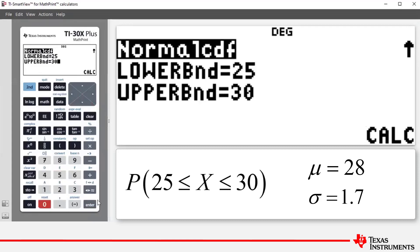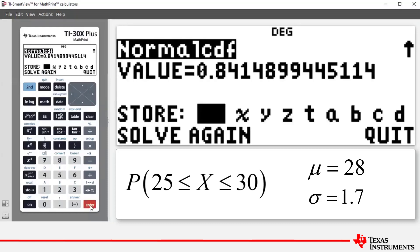We can now press enter to highlight calc, which is short for calculate. Press enter, and so our probability correct to four decimal places is equal to 0.8415. Notice that you have the option to store that value if you need it in a subsequent calculation.